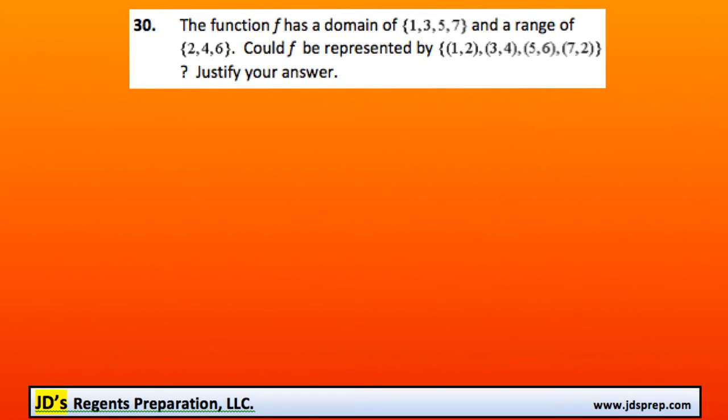This is problem number 30 from the June 2014 Algebra Regents exam. In this question, we're given a function that has a domain of 1, 3, 5, and 7, and a range of 2, 4, and 6. The question is, could f be represented by these four ordered pairs? And justify your answer.